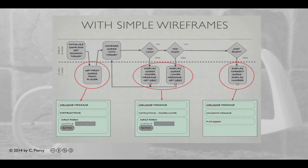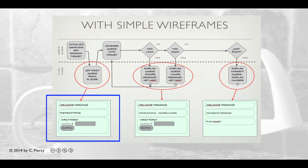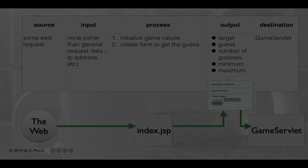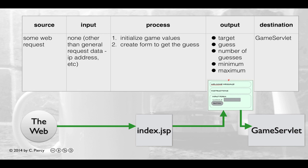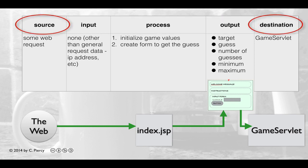Here we see the series of views that the players will see as they guess. We see the outcome of index.jsp will be a welcome message with instructions and the input form. Here's a nice way to think of any component that you're going to build — what we call an IPO table for input, process, and output. I included a couple extra columns to show the source of any input and the destination of any output.